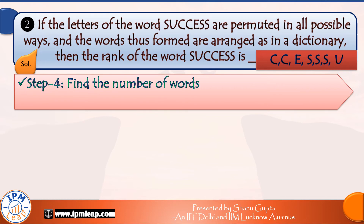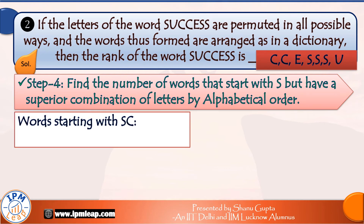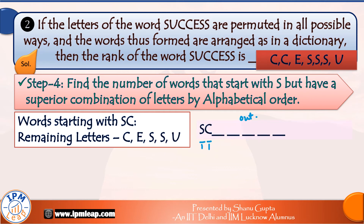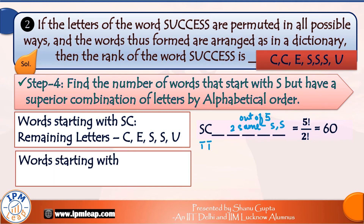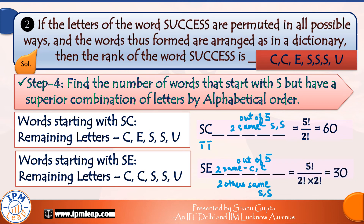Now we count words starting with S that have a superior combination to success. Words starting with S-C: after fixing S and C in the first two places, the remaining five letters are C, E, S, S, U — with two S's — so they arrange in 5! / 2! = 60 ways. Next, words starting with S-E: the remaining five letters have two C's and two S's repeating, arranging in 5! / (2! × 2!) = 30 ways.